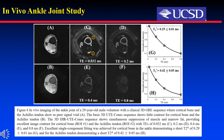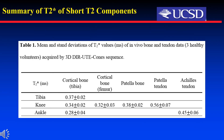These are the in vivo ankle joint results. The DIR-UTE-CONES sequence shows high signals from the tibial mid-shaft and the Achilles tendons. Table 1 summarizes the mean and standard deviation of T2* values for cortical bone, patellar tendon, and Achilles tendon for three healthy volunteers. Very consistent T2* values were observed for those short T2 tissues in vivo, which further confirms the robustness of the DIR-UTE-CONES technique in suppressing long T2 signals.